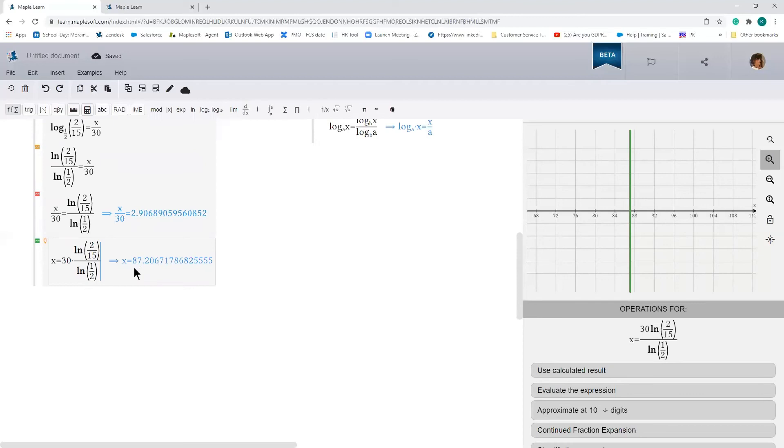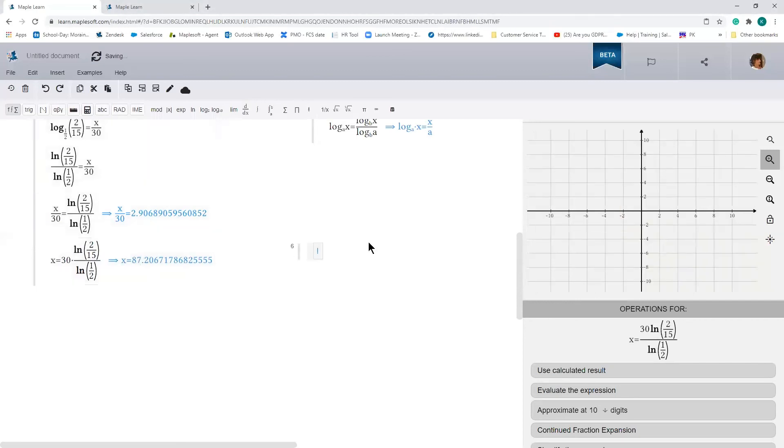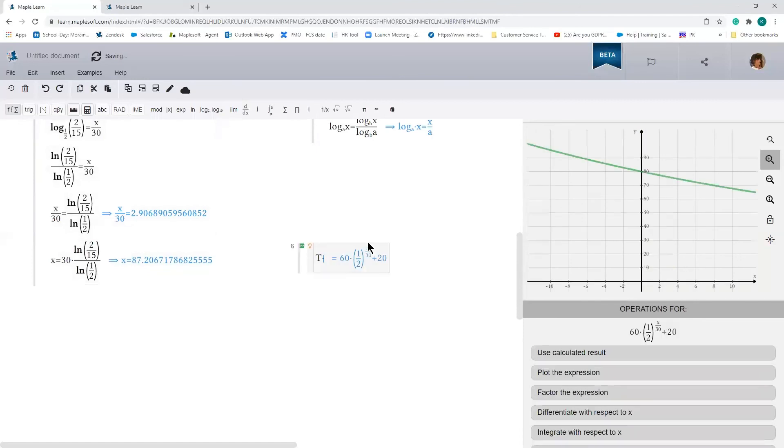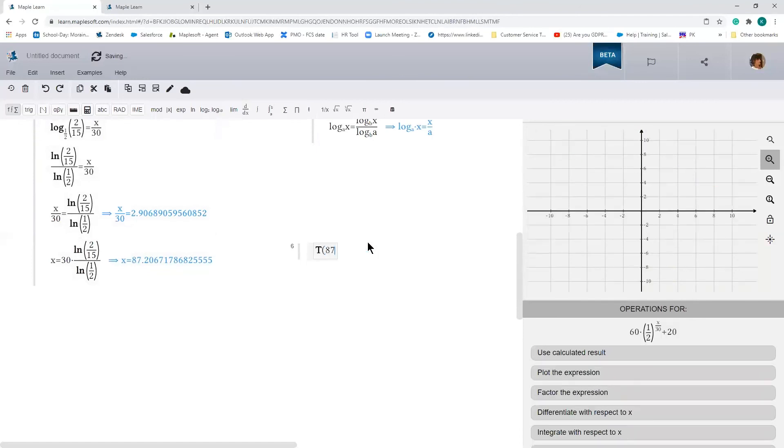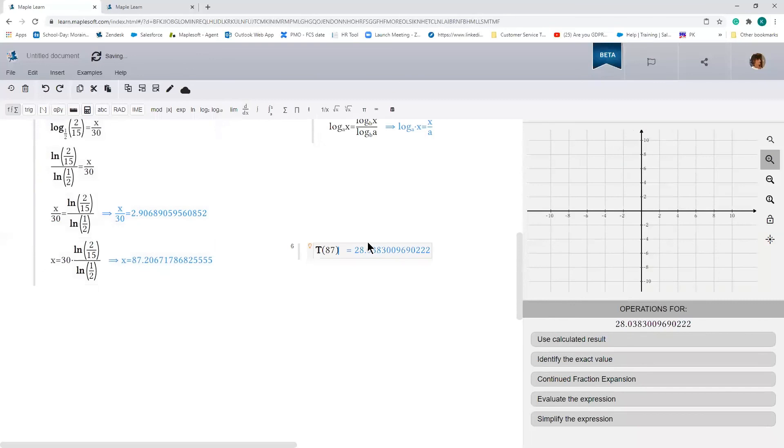So it will take approximately 87 minutes for the liquid to reach 28 degrees Celsius. And we can actually check our work by substituting 87 back into the function for t of x. So let's do that. Let's substitute 87, and we should get about 28 degrees Celsius.